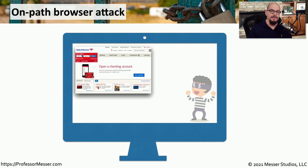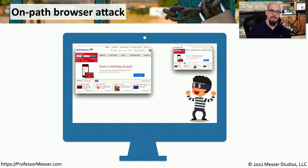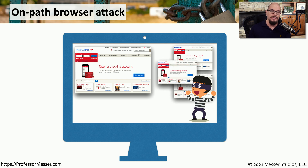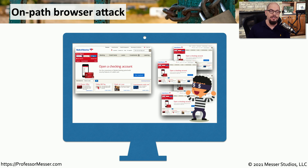With the on-path browser attack, the malware sits in the background and waits for you to log into your bank. Once logged in, the bank trusts your browser and IP address, and authentication is complete. The malware can then capture login credentials, capture keystrokes, recognize that you're logged into your bank account, and begin transferring funds or making modifications. This is a good example of why keeping your antivirus and anti-malware up to date is important — so it can detect on-path browser attacks.